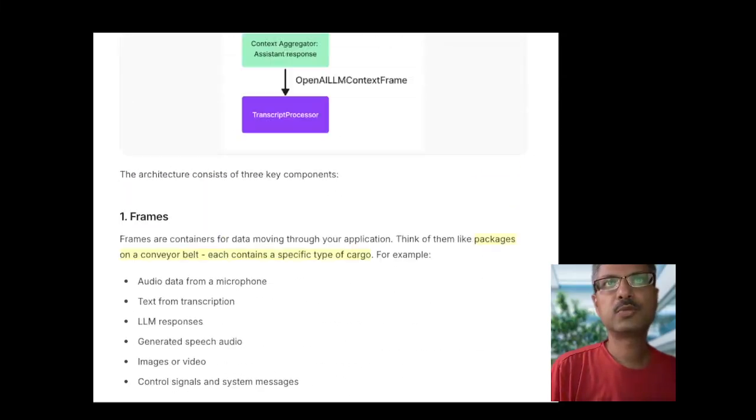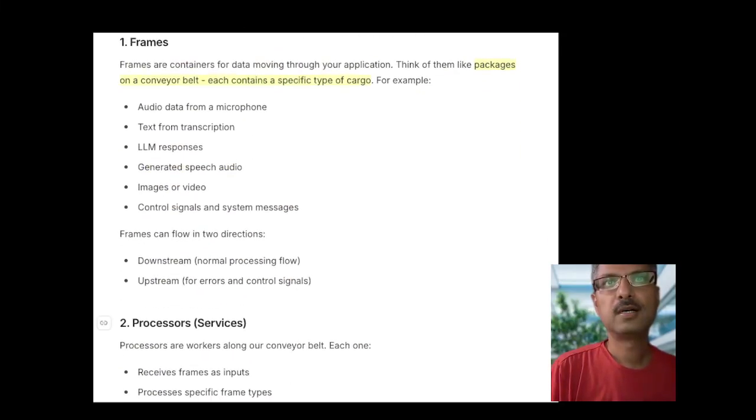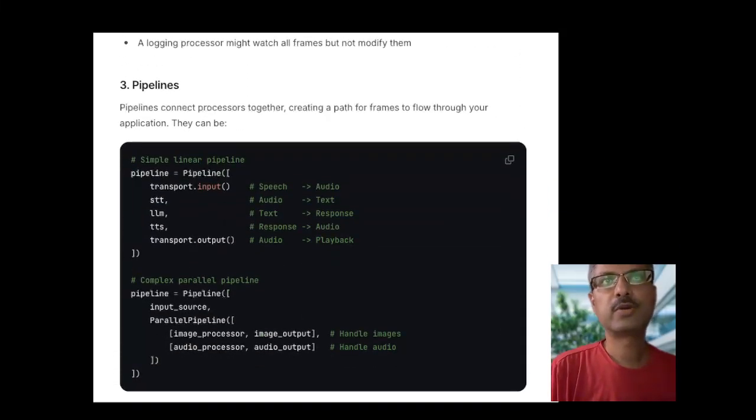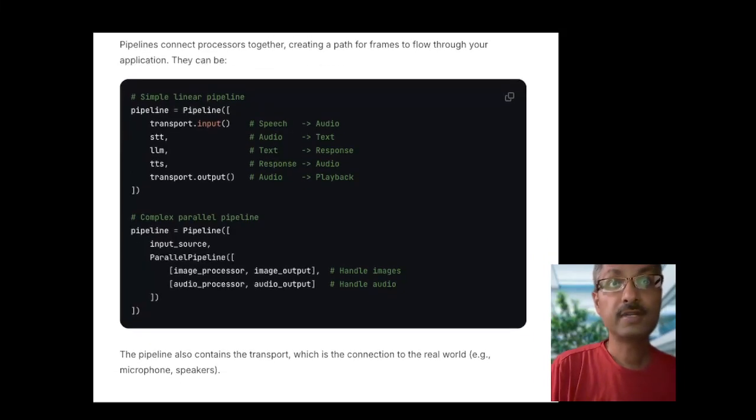So this conceptual model, to implementing this conceptual model, pipeline is the closest programming primitive that fits this conceptual model of a frame transformer. So you start with the transport input. Transport essentially is where raw audio gets into the system or text gets out as raw audio. So you start with the input, speech to text, LLM, TTS. So yes, STT, LLM, TTS are all modules that can be defined where you can use many different API services. For LLM, STT DeepGram, TTS Cartesia, there are several options with different trade-offs.